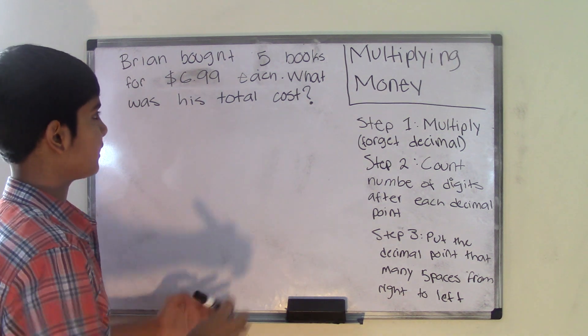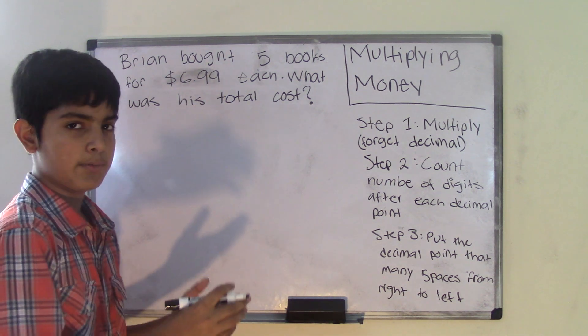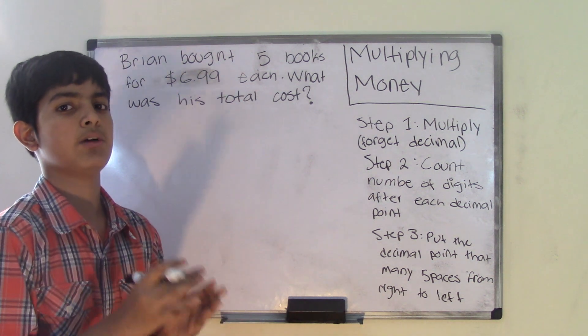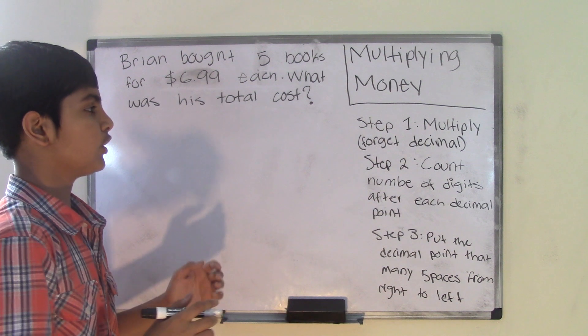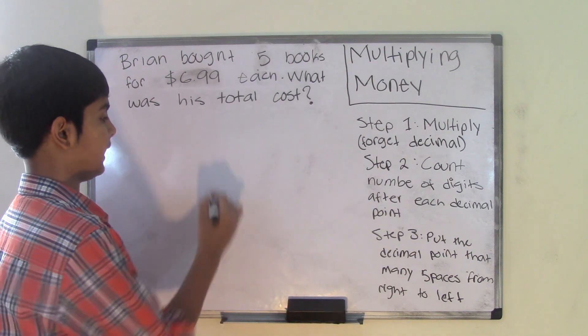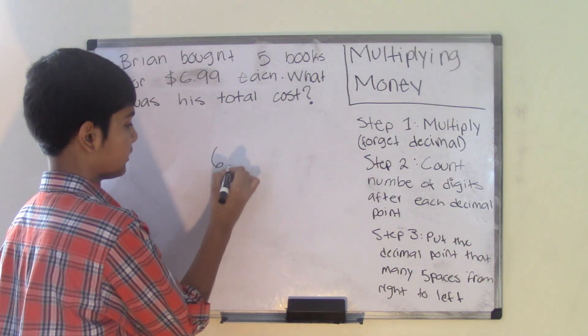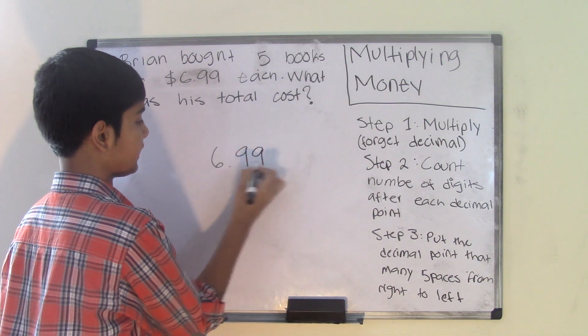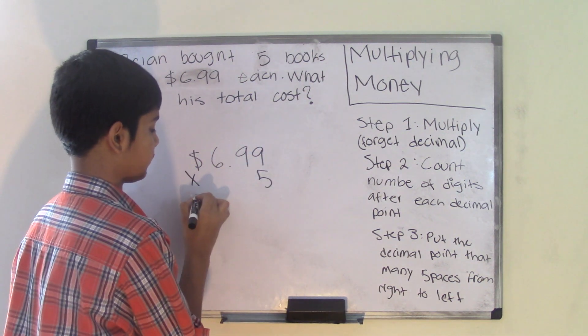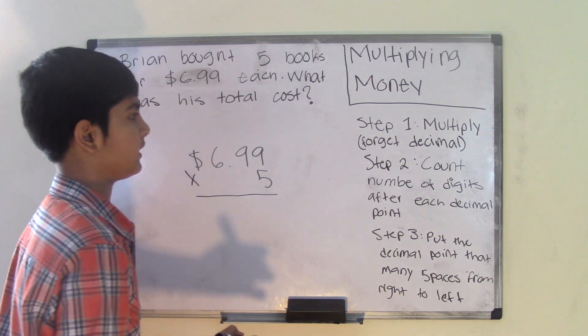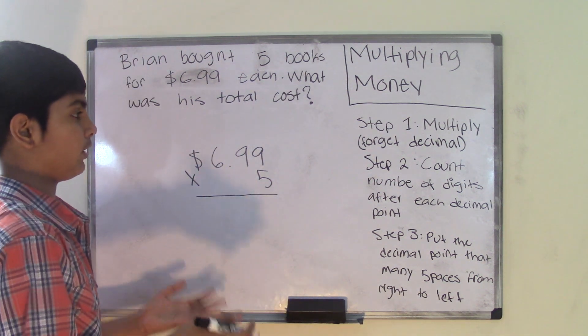So what they're asking is that Brian bought five books and each of them, individually, were $6.99 each. What we need to do is multiply $6.99 by the number five to get the total amount of money. What was his total cost?